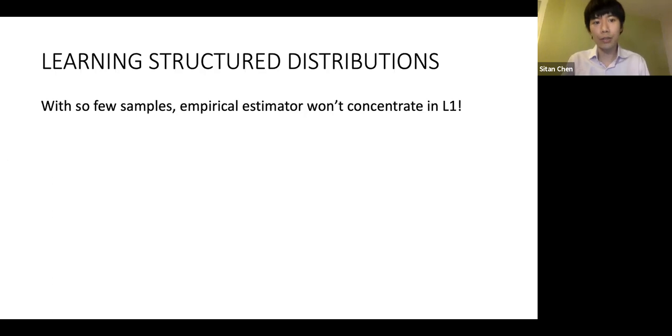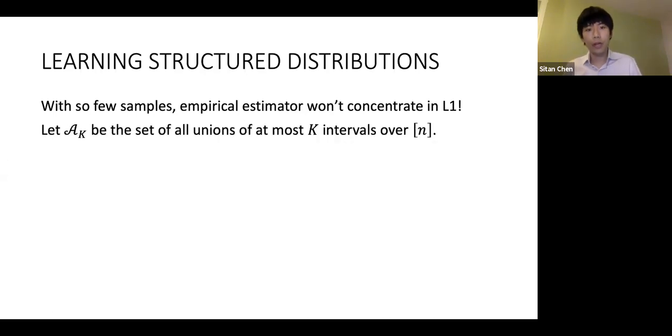But what can I do? The main idea from this line of work is to use a different norm. Let A_k be the set of all unions of at most k intervals over n, where k should be thought of as some kind of complexity parameter for my distribution. Here's an example of a subset of domain size 20 that lies in A_3.